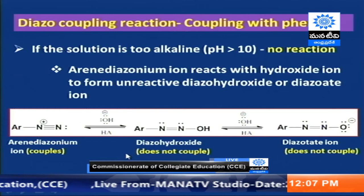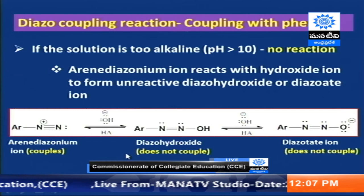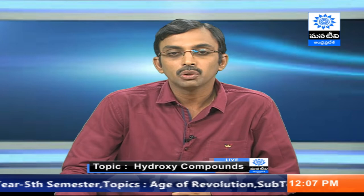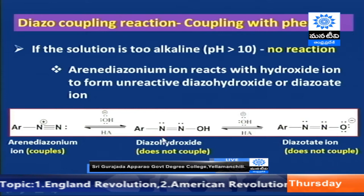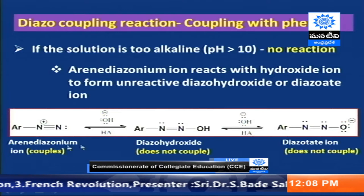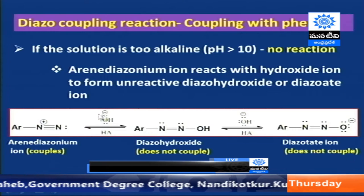If the solution is too alkaline — using a strong base — then the reaction does not take place. In the presence of strong base, the diazonium ion changes into diazohydroxide and also diazohydroxide ion. Because of the conversion of the free arene diazonium ion into these two species, the diazonium ion is no longer free. Therefore, it will not undergo any diazo coupling reaction with the phenols.